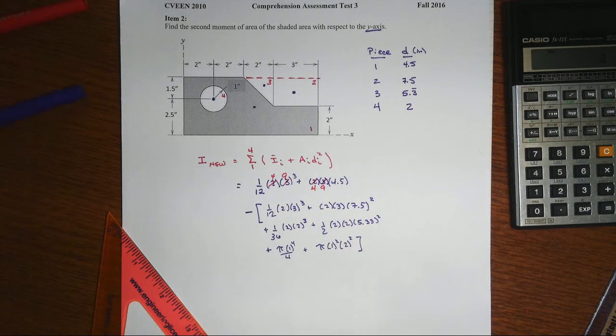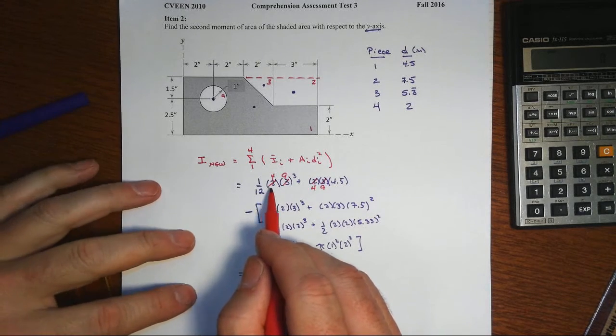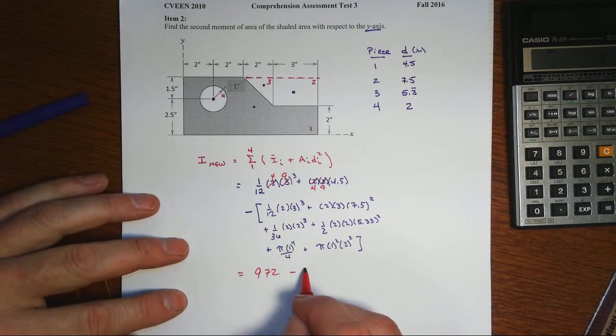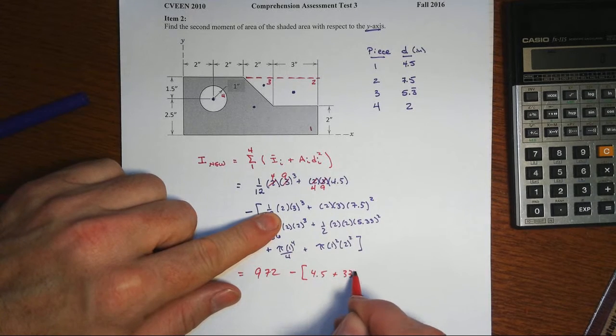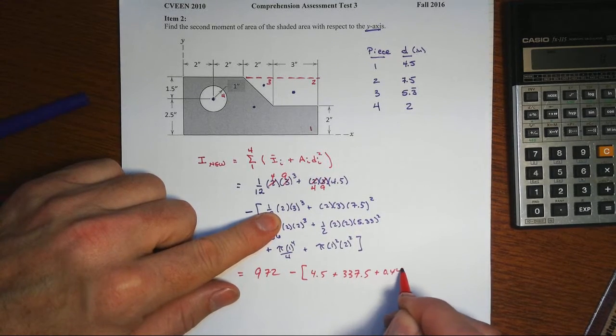And when we start to add up these numbers, then you'll end up with that first one being 972, and it'll subtract off the 4.5, the 337.5, the 0.444.